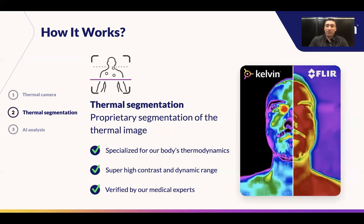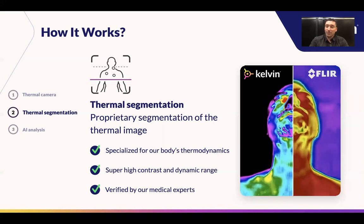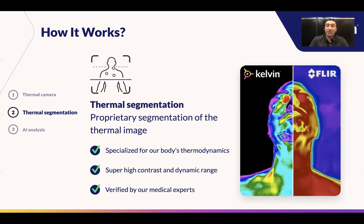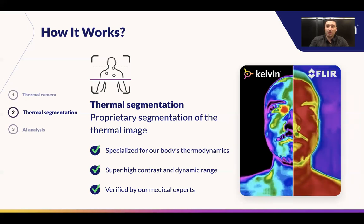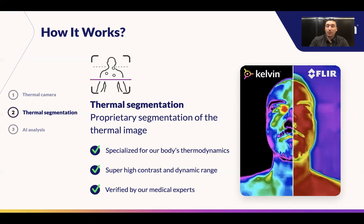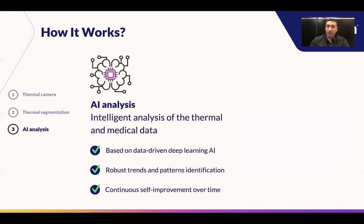typically naked above the waist. Then we apply our specific medical thermal segmentation of the image that can spot various types of anomalies and differences, or at least make them visible as part of the thermal image. As a next step, we apply artificial intelligence analysis of those images using state-of-the-art machine learning approaches to detect various types of anomalies or severe changes in condition.